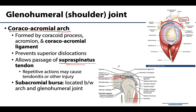There is also a bursa in this region that helps reduce friction between the coracoacromial arch and the glenohumeral joint, referred to as the subacromial bursa, sometimes called the subdeltoid bursa. Like any bursa, it can become inflamed and bursitis can develop in this region. This is an important bursa to be aware of.